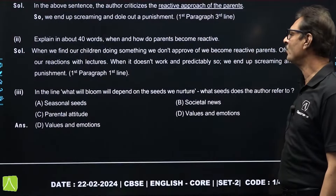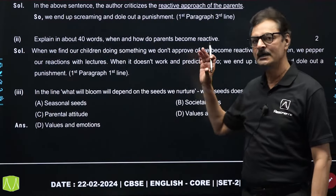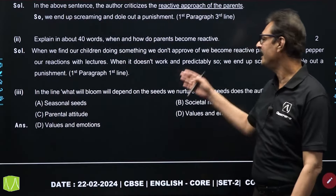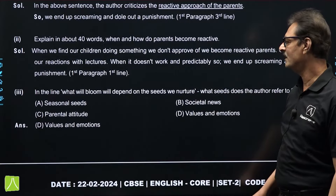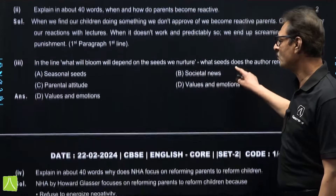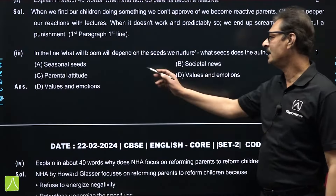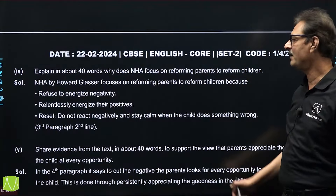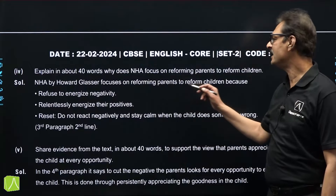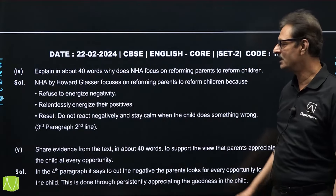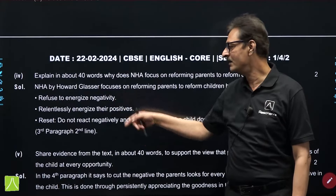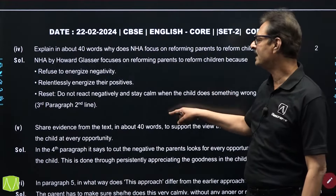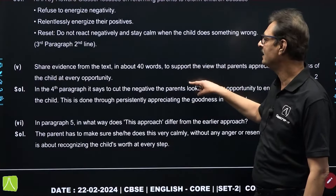Moving on to the second question: explain in about 40 words when and how do parents become reactive. The answer to this question was straightforward in the first paragraph, the first line itself. Moving on to the MCQ, which is a bit tricky — from the given options, you have to identify the correct option and the answer is option number D, that is values and emotions. The next question was subjective: explain in about 40 words how NHA focuses on reforming parents to reform the children. NHA by Howard Glaser focuses on reinforcing parents to reform children because they refuse to energize negativity, relentlessly energize positive, reset and so on.